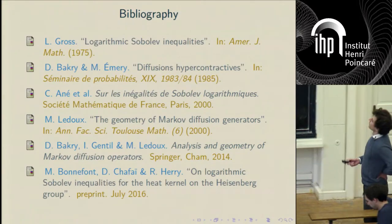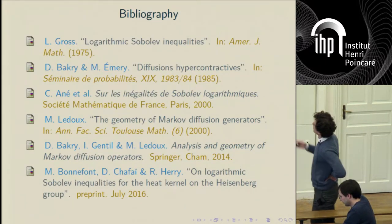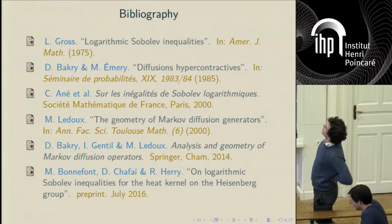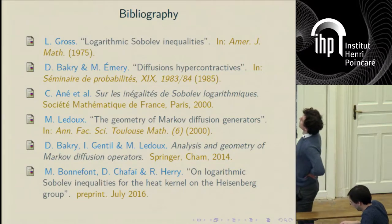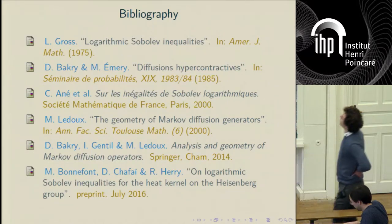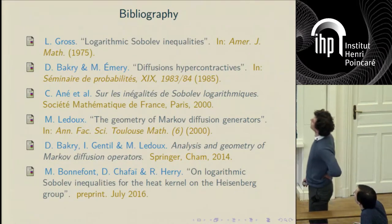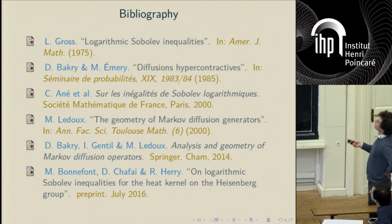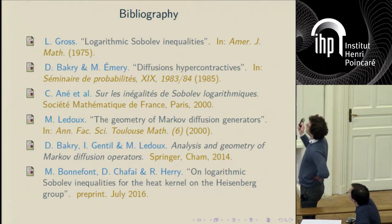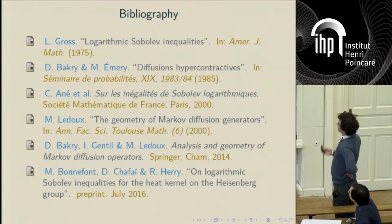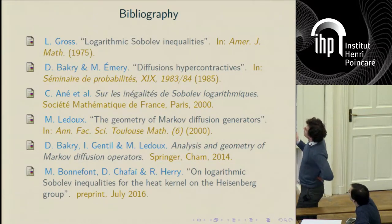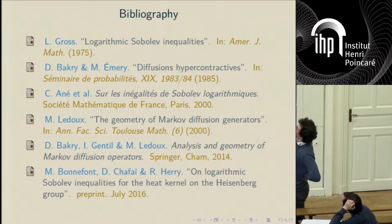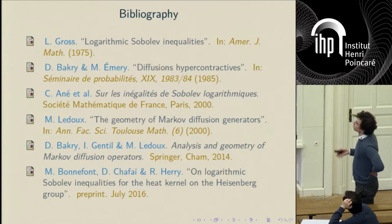I'll give a short bibliography for this talk. There is the article of Gross from 1975, which is the original one. Then a paper by Bakry and Émery, which is in French — if you can read French you should read it, it's very interesting. Then one book by students of Toulouse — Anné, Blacher, Chaffaille, and so on — about logarithmic Sobolev inequalities, also in French. There is also a survey by Ledoux: if you cannot read French, you can read this survey in English, which covers basically the same content as the Bakry-Émery article but is more polished and precise.